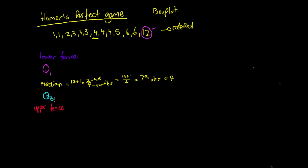The next thing we need is our third quartile. For the IQR, our third quartile uses the same formula — we take our number of observations, add 1, then multiply by our desired quartile. So we want the third quartile over 4, giving us 13 plus 1 divided by 4 times 3. We'll find that our third quartile is at the 10.5th observation.